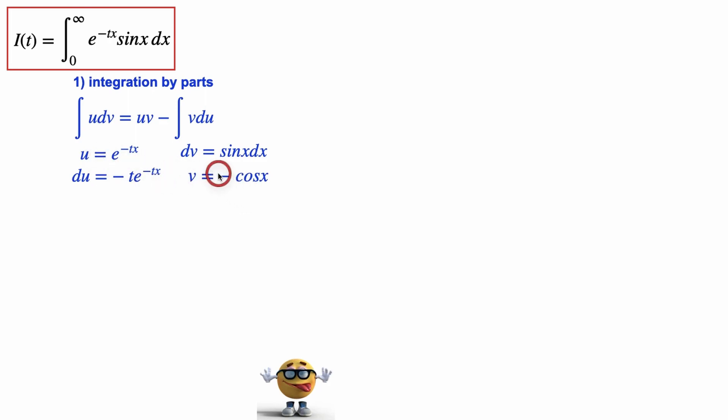So we'll take these and plug them into the integration by parts formula for our integral, which gives us this. So I(t) is what we're trying to solve for, equals u times v. So this is u times v with the negative, evaluated from 0 to infinity,